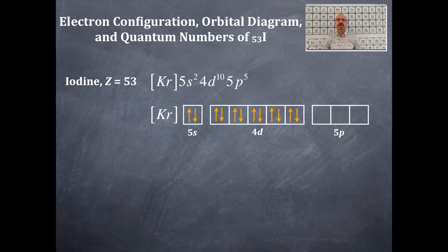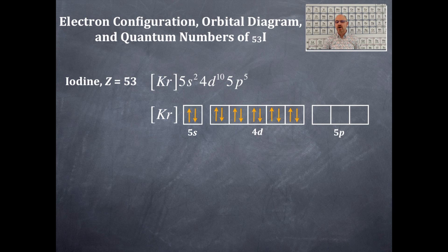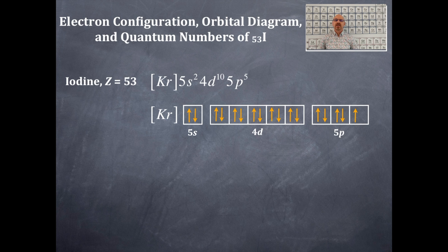Do them in the order of filling: up, up, up, up, up, up, then down, down, down, down, down. Where the rubber meets the road is in the last sub-level — the 5p — because it's not completely filled. That's why you need to place the electrons in order: up, up, up, then down and down. And so that is the orbital box diagram for iodine.